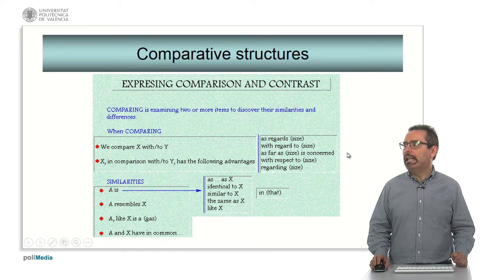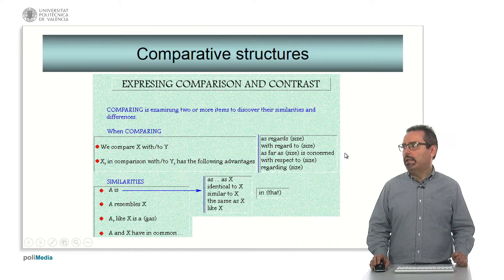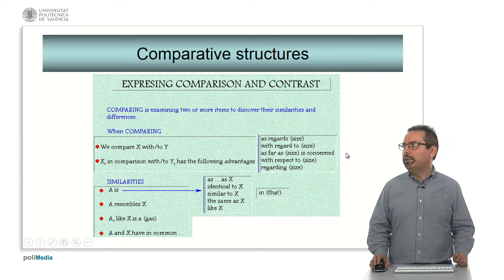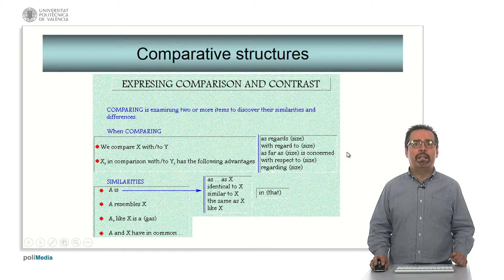For example, we can say we compare X with or to Y as regards size, etc. When we are talking about similarities, we can use different expressions: 'as...as', 'identical to', 'similar to', 'the same as', or 'like'. Other possibilities are with the verb 'resemble', 'like', or 'to have in common'.